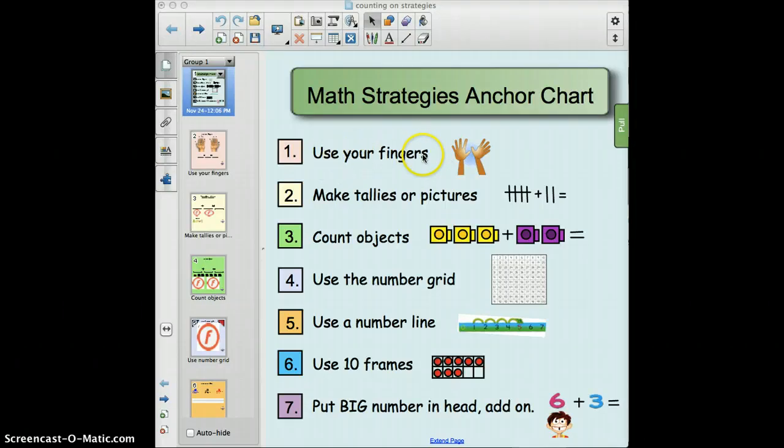This first one says use your fingers. The second one is make tallies or pictures to make a math sentence like the example shows. Count objects - these are called unifix cubes which we use in first grade a lot. Unifix cubes come in different colors and you can put the cubes together with your hands. And those are a type of manipulative that first graders can use. And then number four is use the number grid.